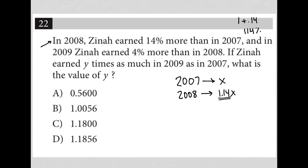Then it says, and in 2009, Xena earned 4% more than in 2008. Okay, well then 2009 was this 1.14X from 2008 times 1 point... let's see, how would I think about that?